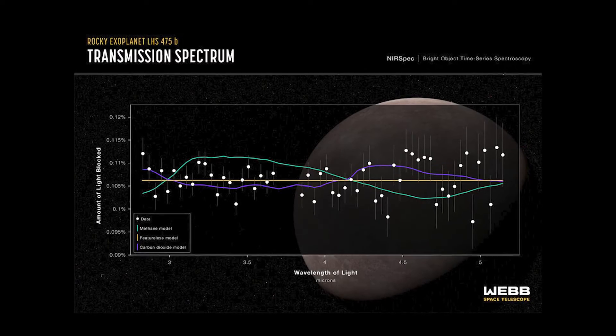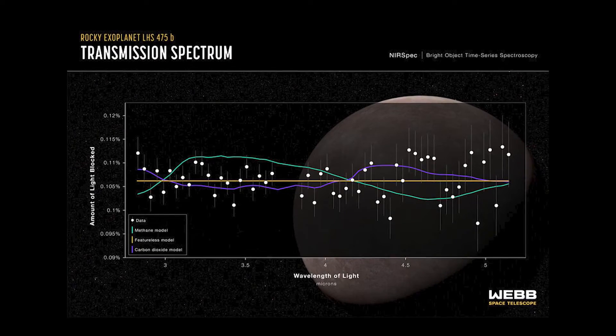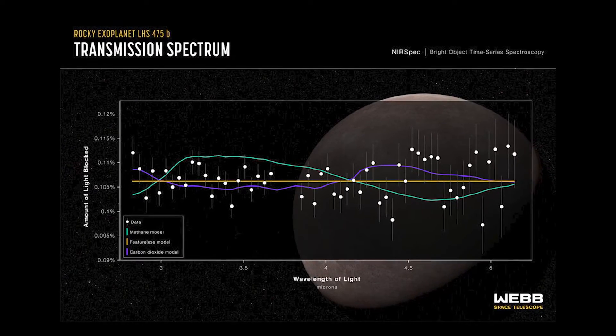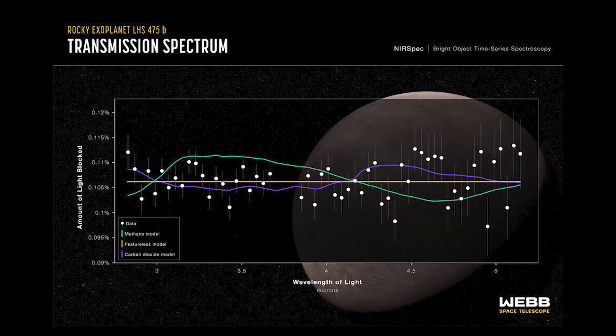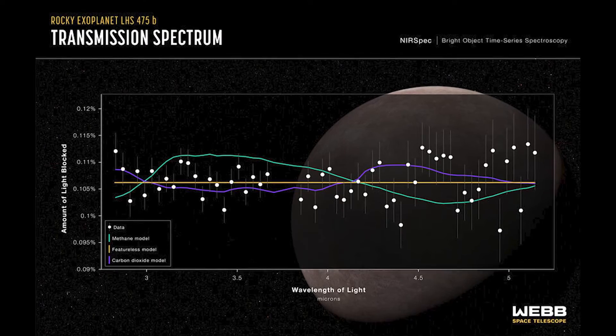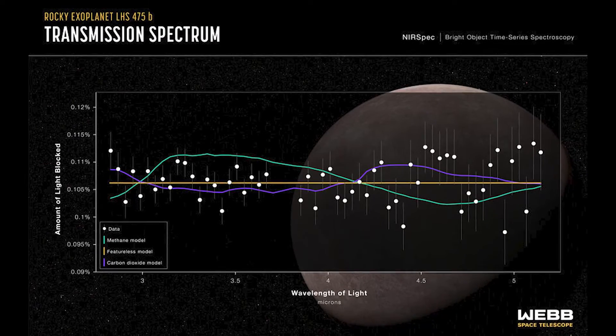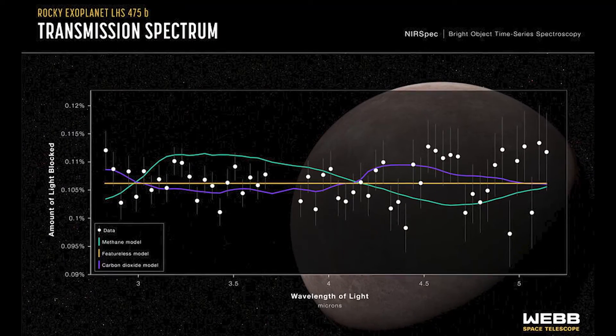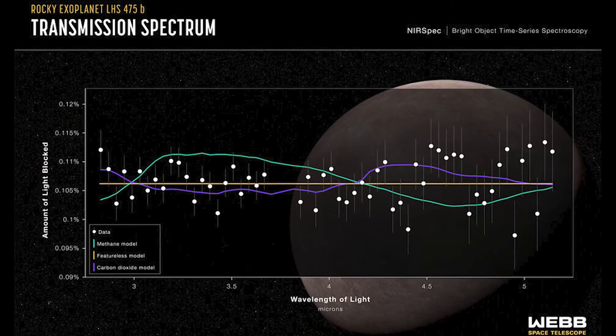The newly discovered planet, named LHS-475b, is located 41 light-years away in the constellation Octans. While much about the planet remains to be discovered, initial observations have revealed that it is only slightly larger than Earth and has a higher temperature than our planet.